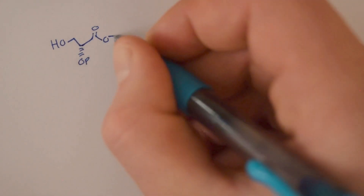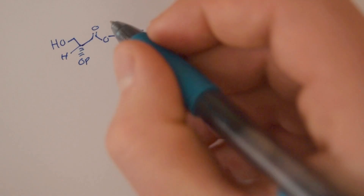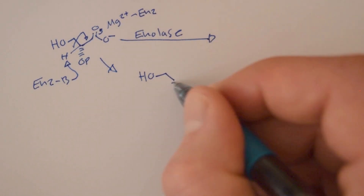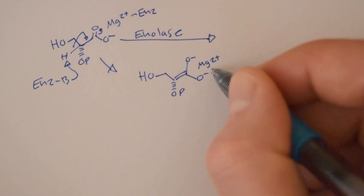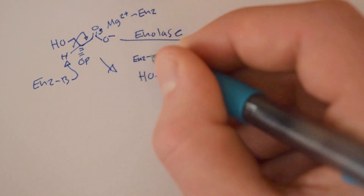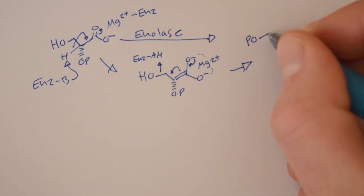Now, the enzyme enolase, which has a stabilizing magnesium ion in it, kicks off a water, leaving us with phosphoenolpyruvate.